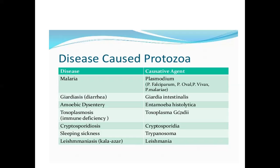Diseases caused by Protozoa: malaria is caused by Plasmodium species — P. falciparum, P. ovale, P. vivax, and P. malariae. Second: giardiasis — diarrhea, affects the intestine. Third: amoebic dysentery caused by Entamoeba histolytica. Fourth: toxoplasmosis — immune deficiency — caused by Toxoplasma gondii. Fifth: cryptosporidiosis. Sleeping sickness caused by Trypanosoma gambiense, and kala-azar caused by Leishmania.